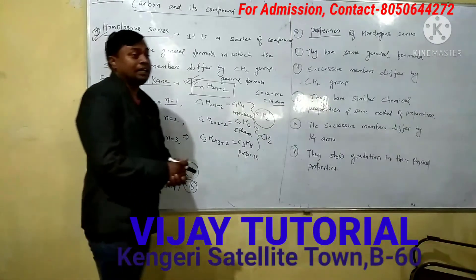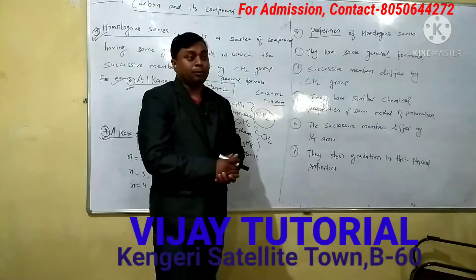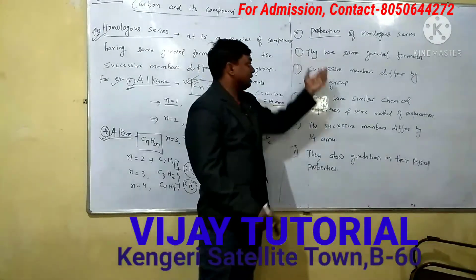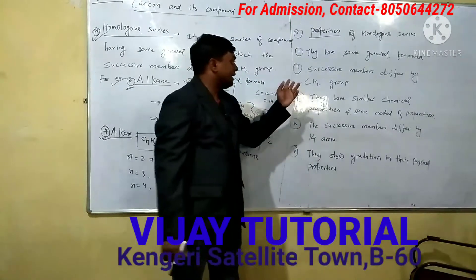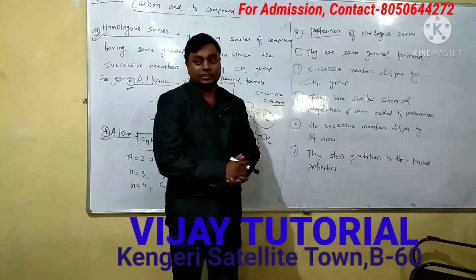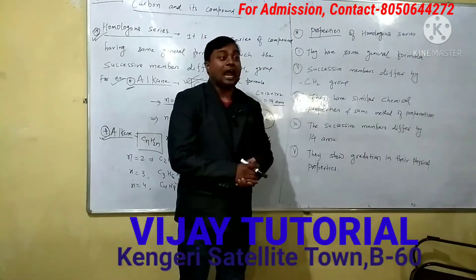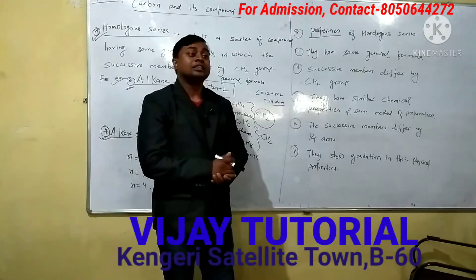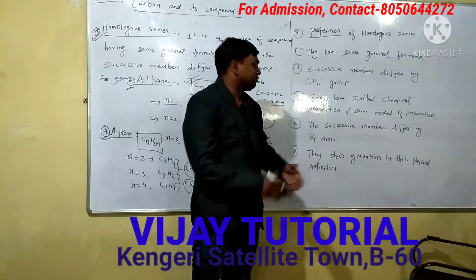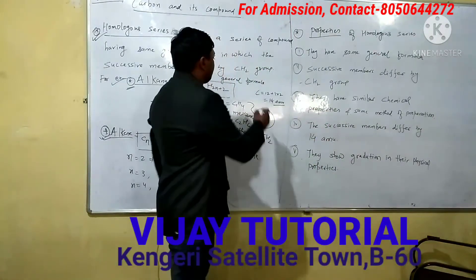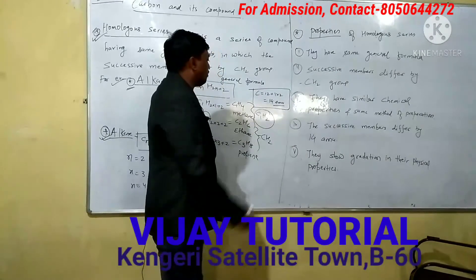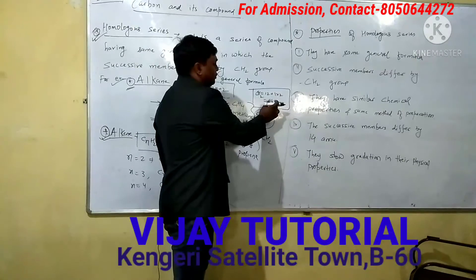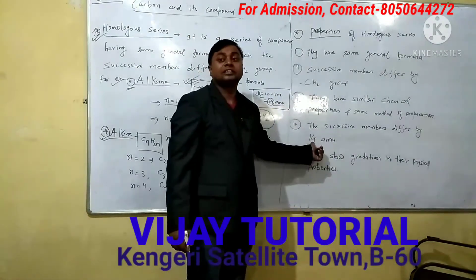They may also ask you any three chemical properties or just properties of homologous series. First, they have the same general formula. Second, successive members differ by a CH2 group. Third, they have similar chemical properties and the same method of preparation — all members of a homologous series have similar chemical properties. Next, successive members differ by 14 atomic mass units. This is because the molecular mass of CH2 equals 12 (carbon) plus 1×2 (hydrogen), that is 14 atomic mass units.